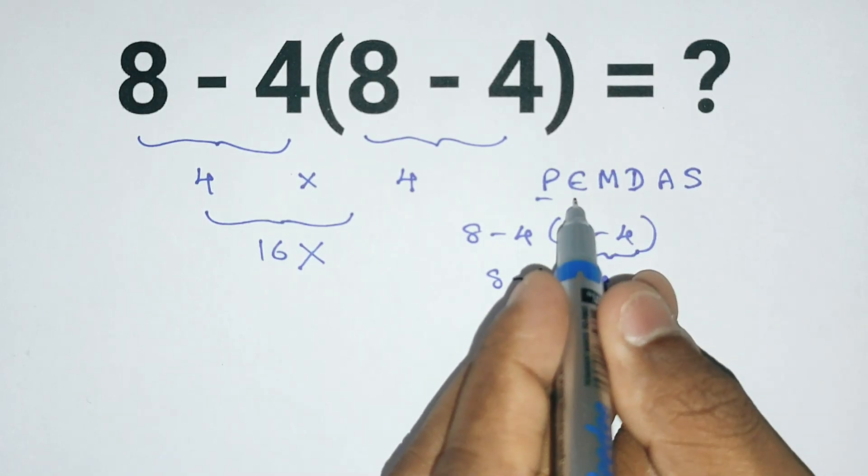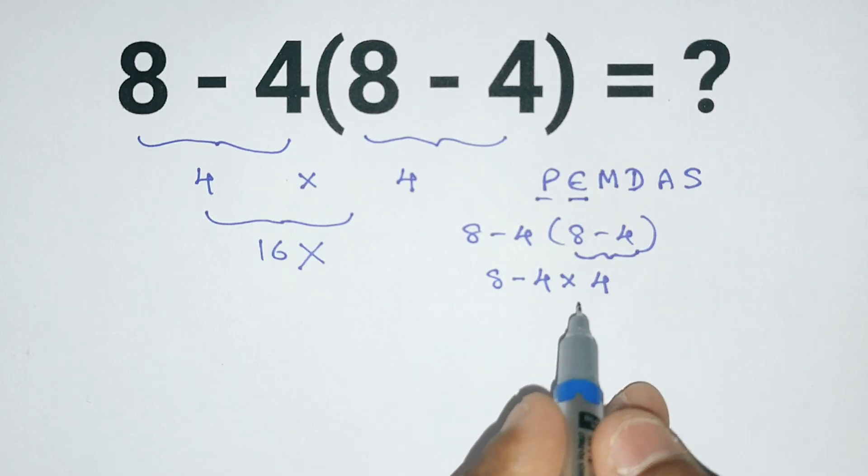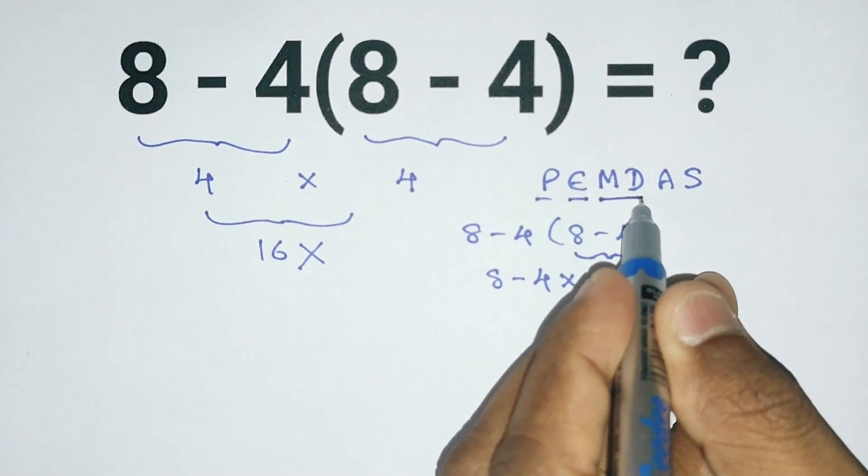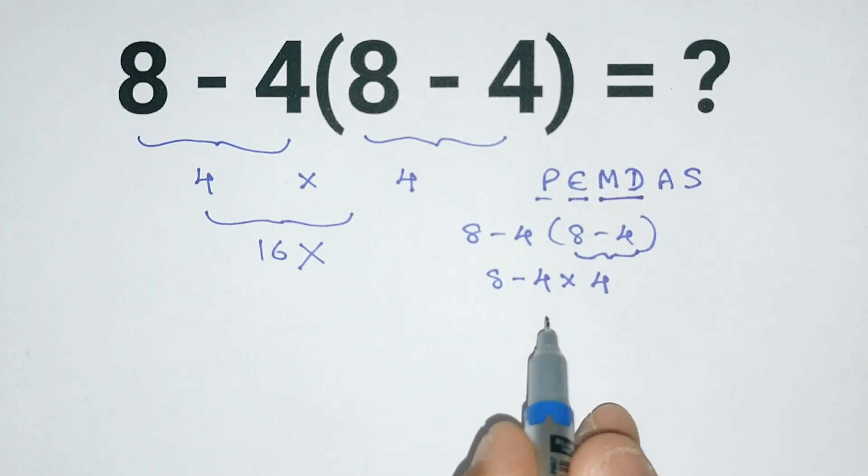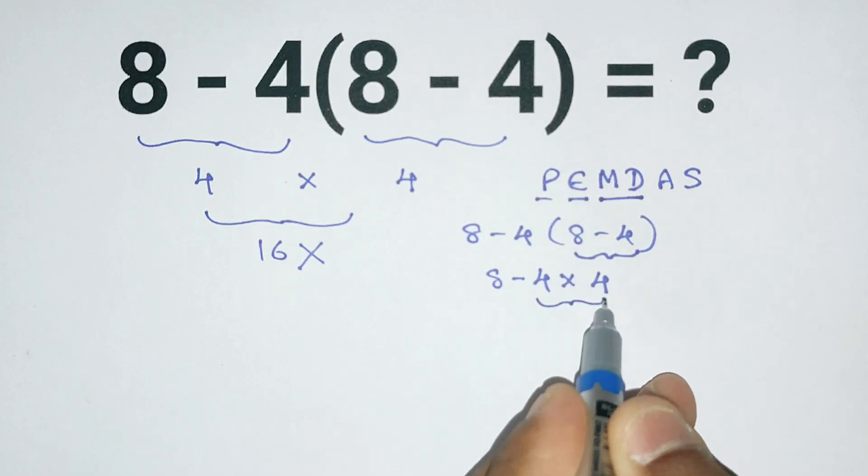Next we look for exponents, but there are none in this expression. Then we handle multiplication and division, and here we have multiplication. 4 times 4 is 16.